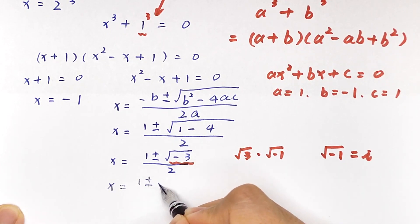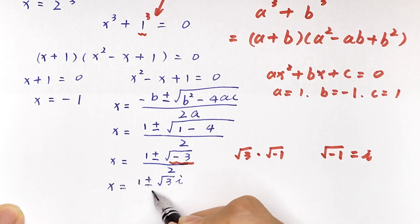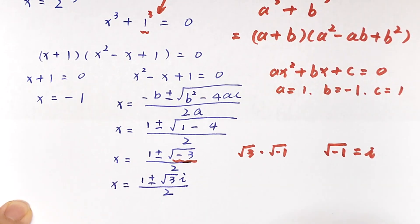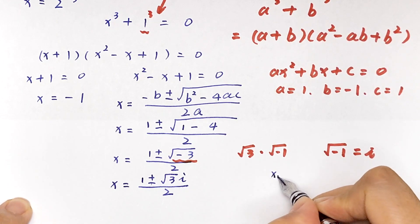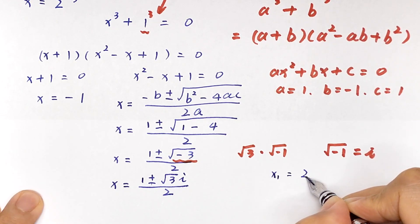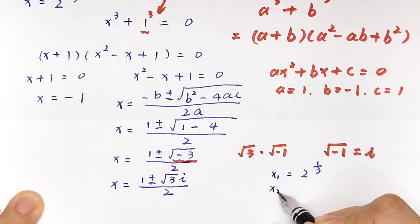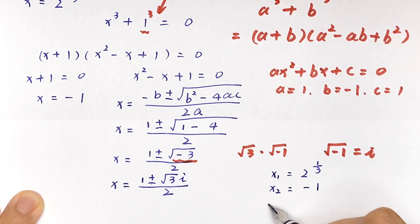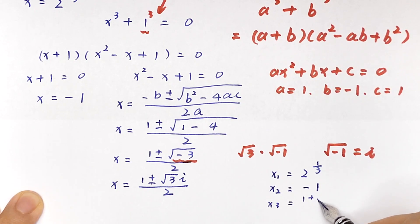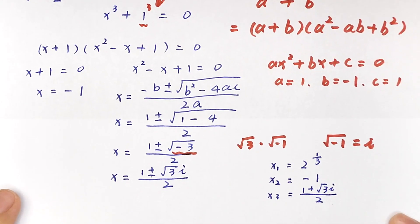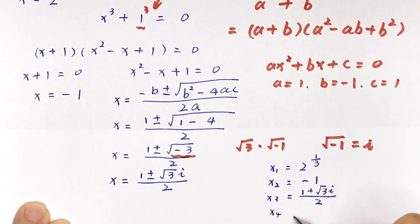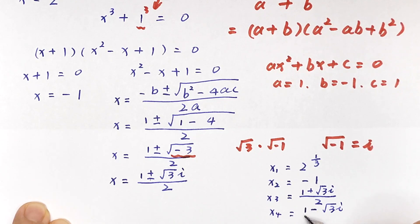Therefore, our complete set of answers is: x equals 2 to the power 1 over 3, x equals negative 1, x equals 1 plus square root of 3 times i over 2, and x equals 1 minus square root of 3 times i over 2.